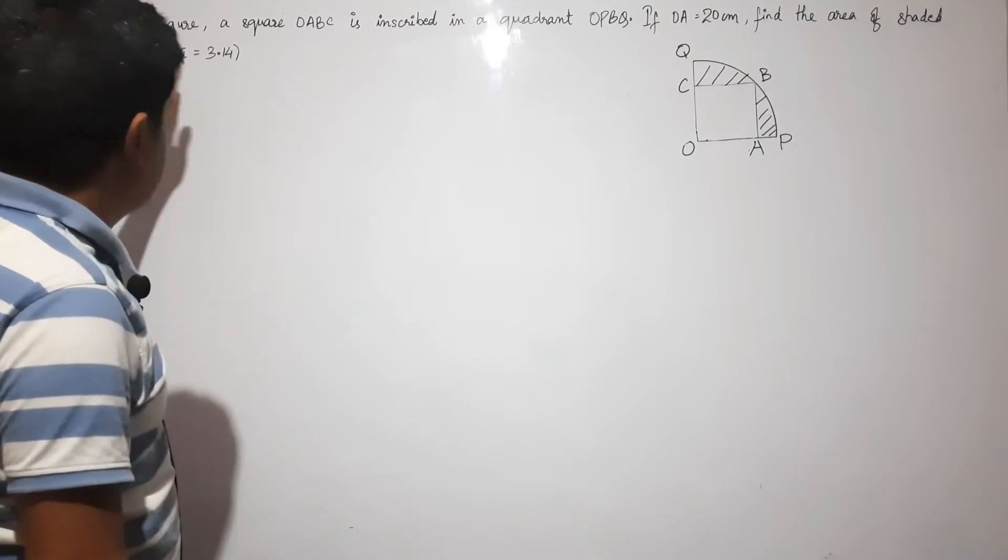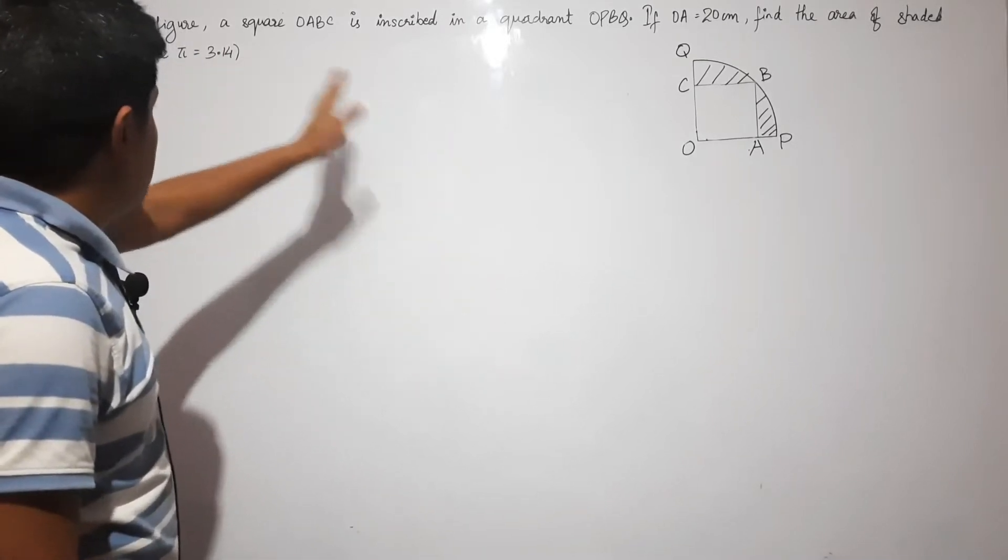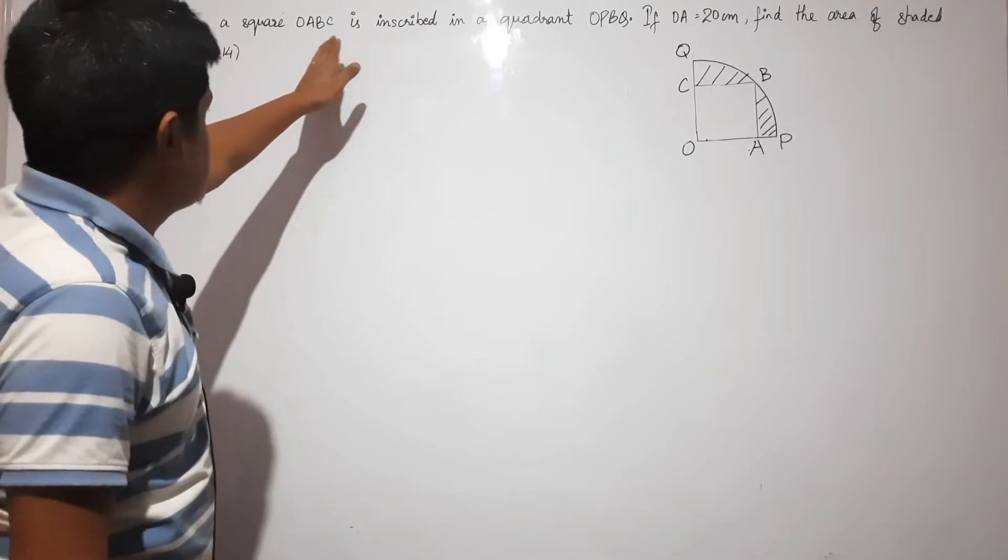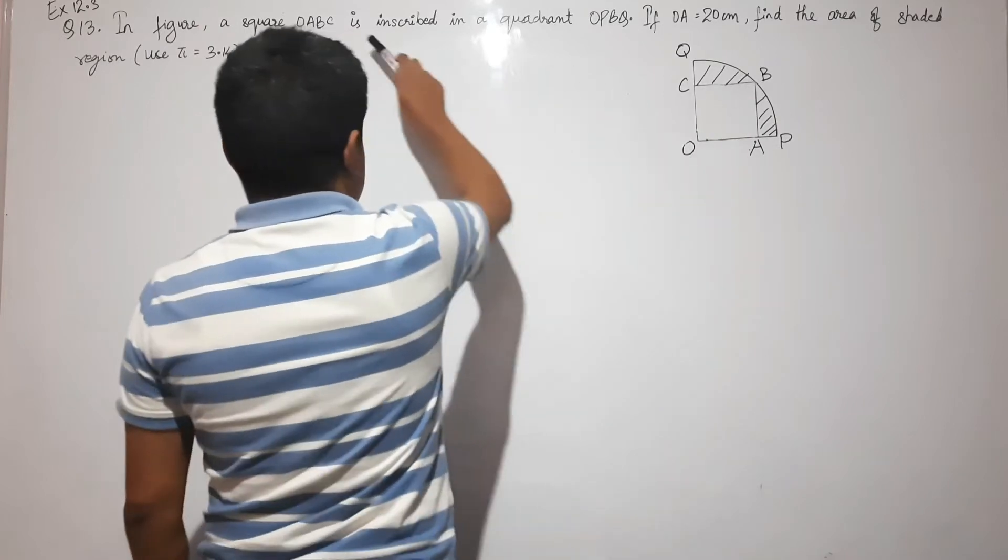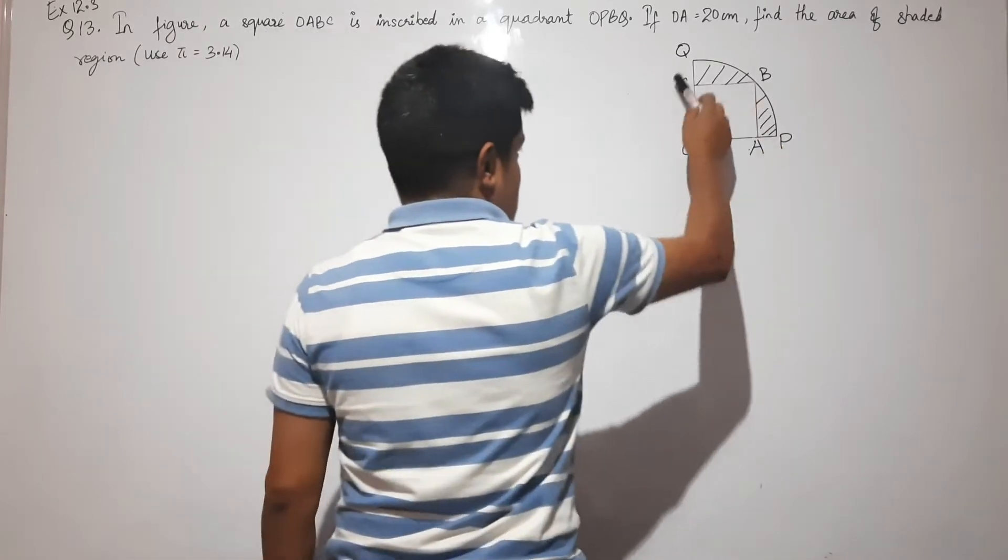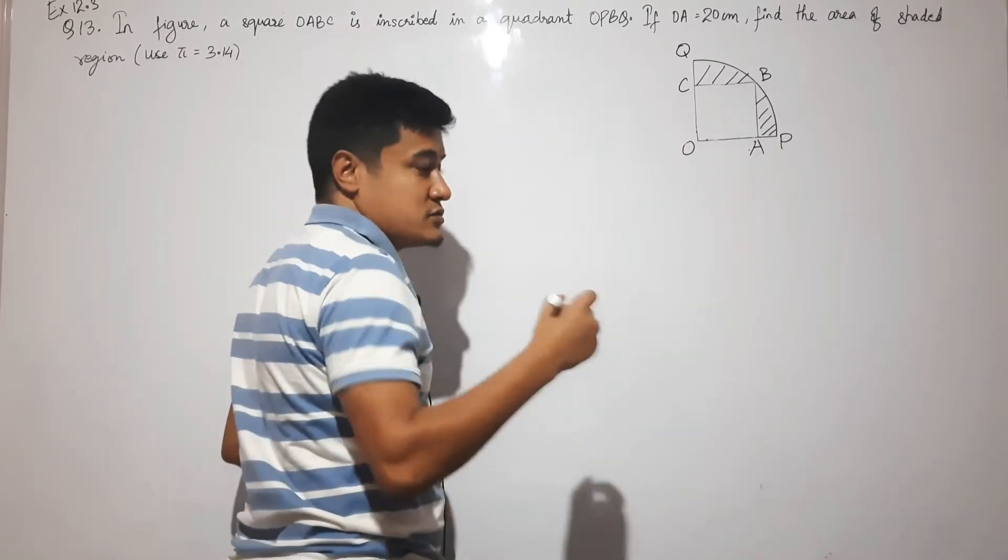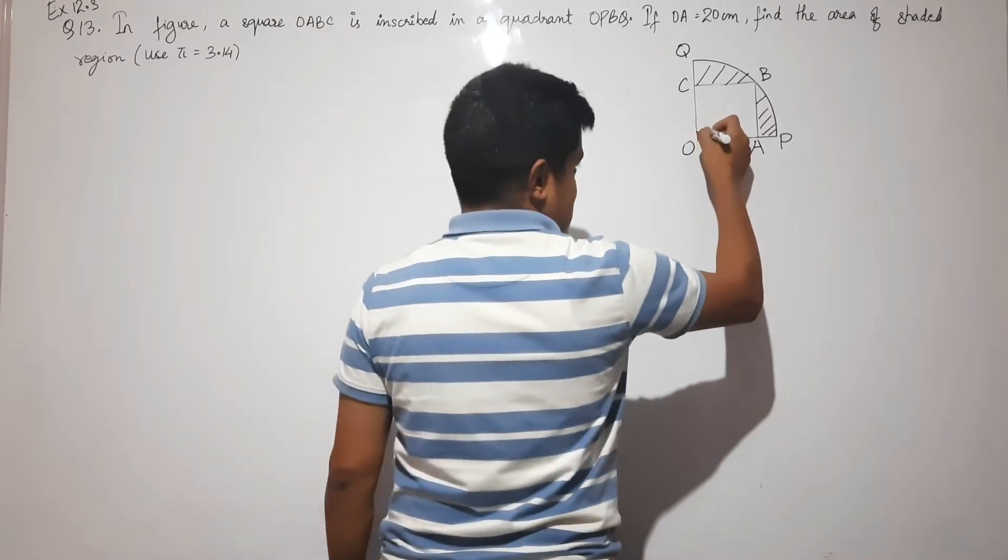In the figure, the question says: a square OABC is inscribed in a quadrant. A quadrant means a sector whose angle is 90 degrees.